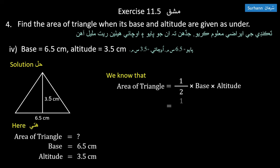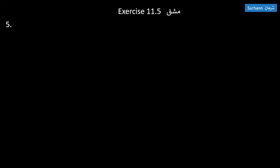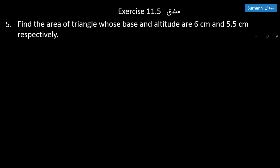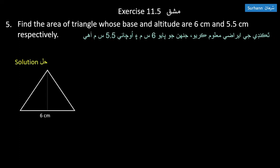This equals 11.375 square centimeters. Part four: find the area of triangle whose base and altitude are 6 centimeters and 5.5 centimeters respectively. Area of triangle equals one-half times 6 times 5.5.